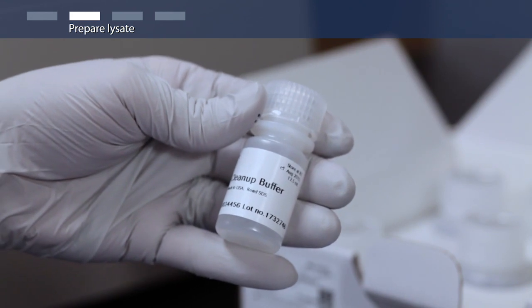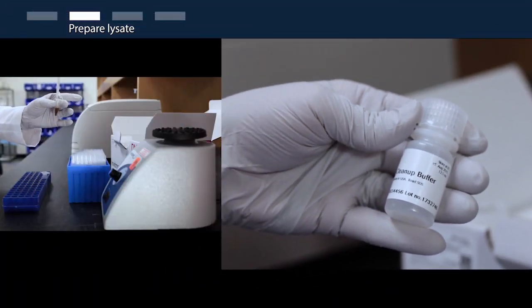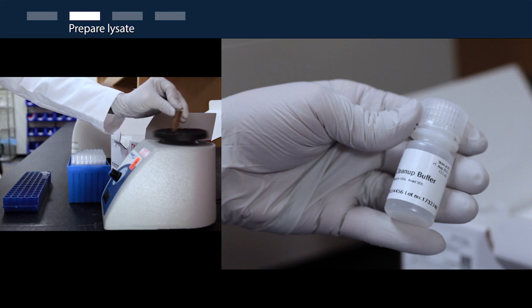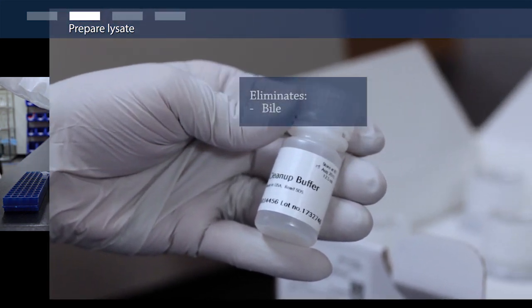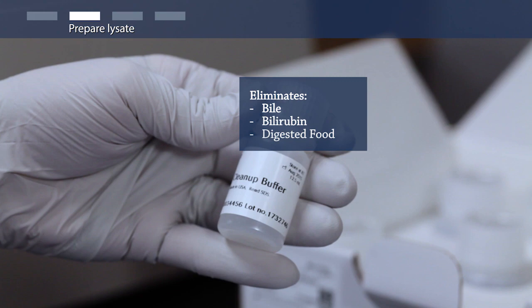Now, add 250 microliters of cleanup buffer and vortex immediately to ensure even dispersion. This step eliminates inhibitors of downstream analysis like bile, bilirubin, digested food, and humic acids.